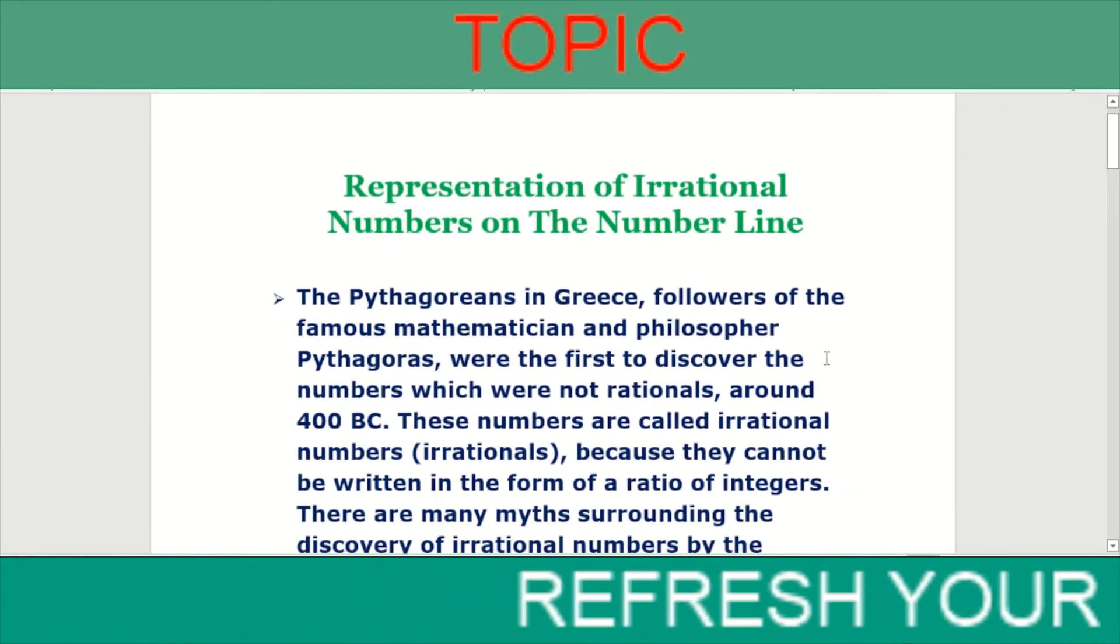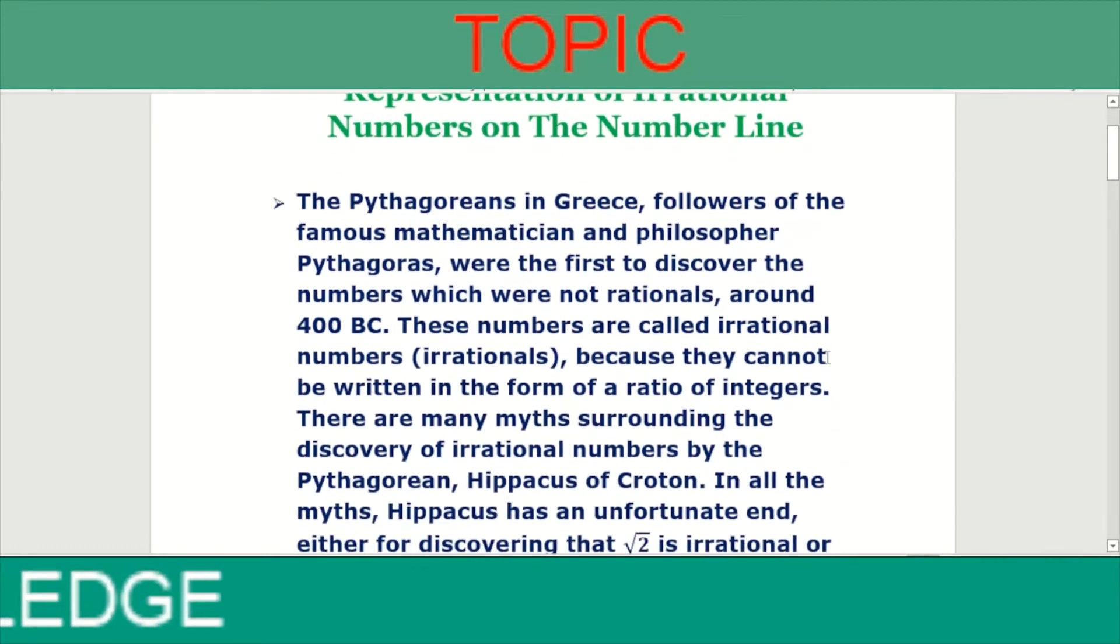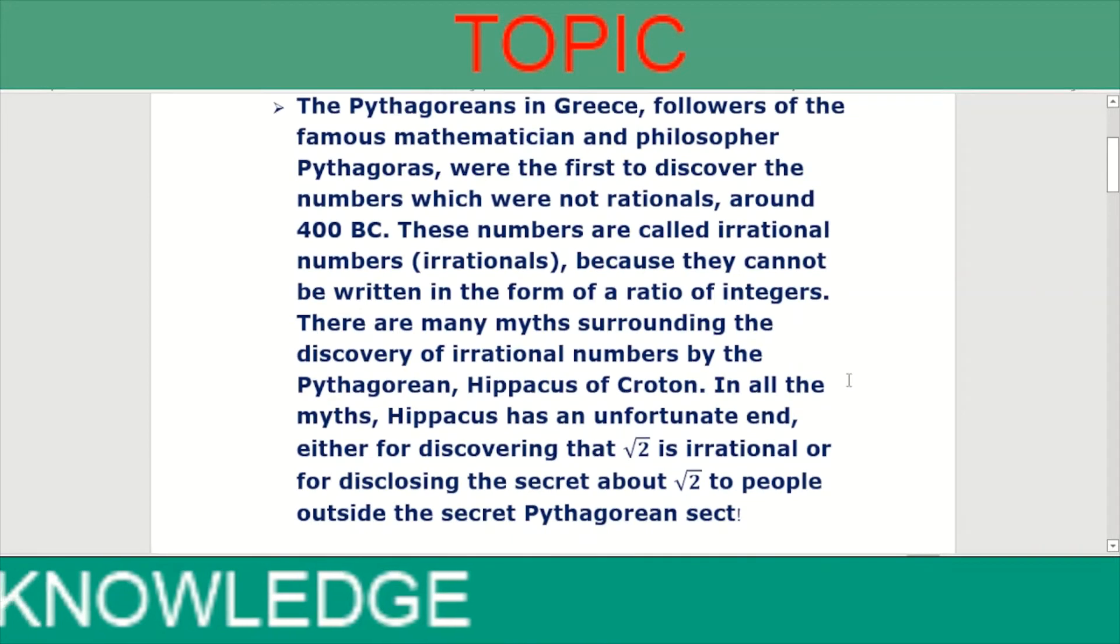These numbers are called irrational numbers because they cannot be written in the form of a ratio of integers. There are many myths surrounding the discovery of irrational numbers by the Pythagoreans.